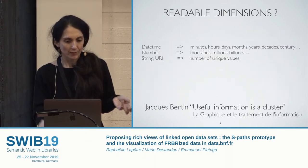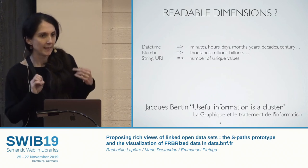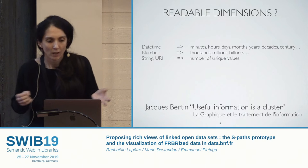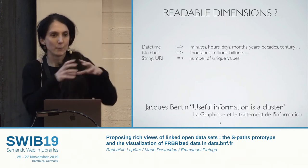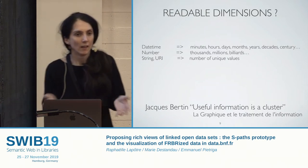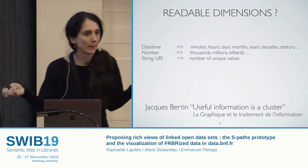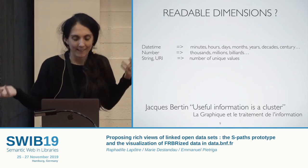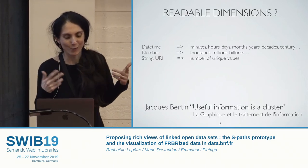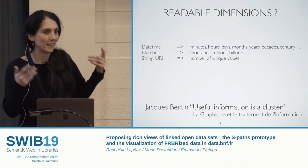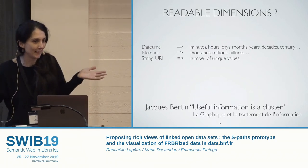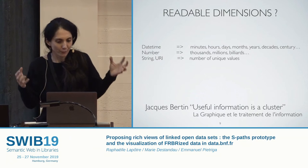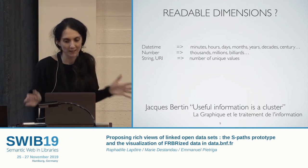We noticed that Bertin's clustering was always either quantitative or categorical. The nice thing with linked data is that they can tell us about their data type, so we are able to know if the data is quantitative. For example, if it's a date, we can aggregate by years, decades, centuries, or eras. More complicated are strings and URIs, which are very common in linked data, and we were trying to find a way to categorize those as well.